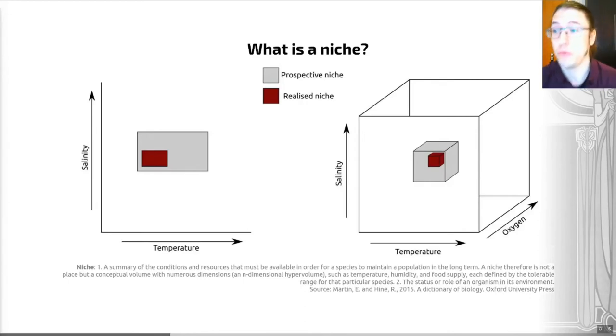I've put a definition on this slide for you here. So a niche is a summary of the conditions and resources that must be available in order for a species to maintain a population in the long term. A niche is therefore not a place, but a conceptual volume with numerous dimensions, including temperature, humidity, and food supply, each defined by the tolerable range for that species. So that is a working definition of what an ecological niche is for a species.